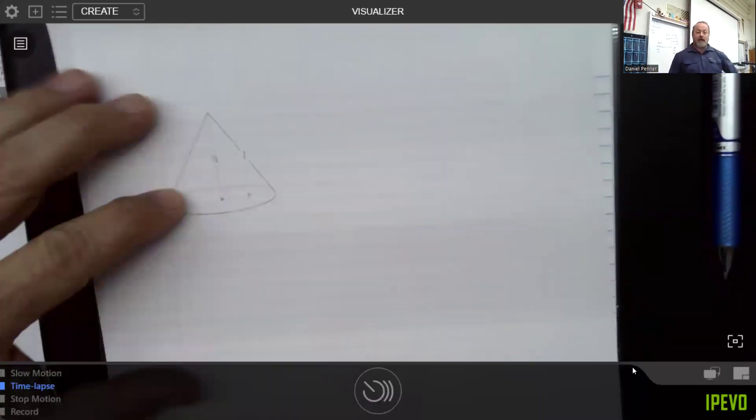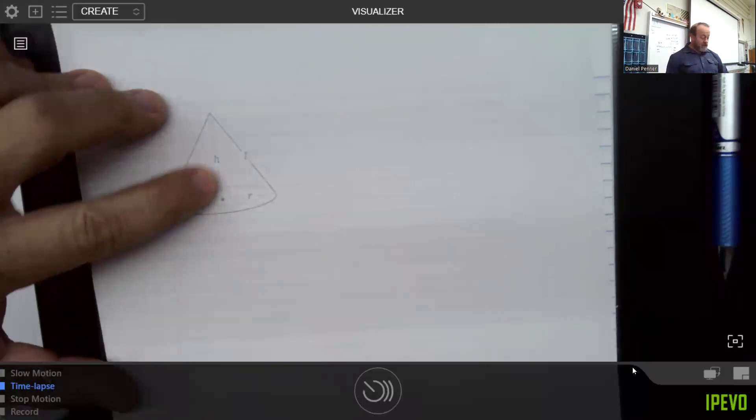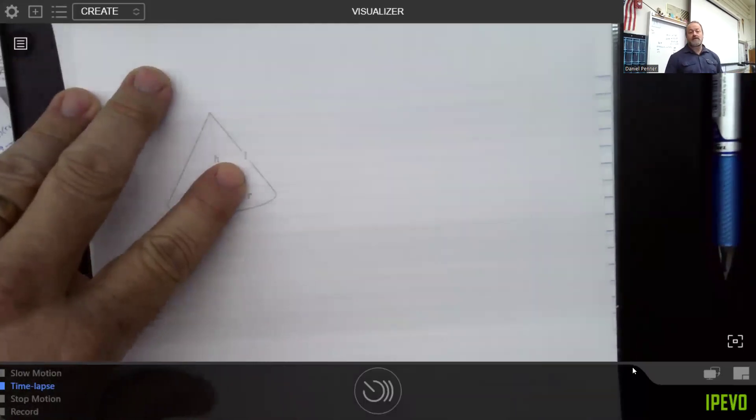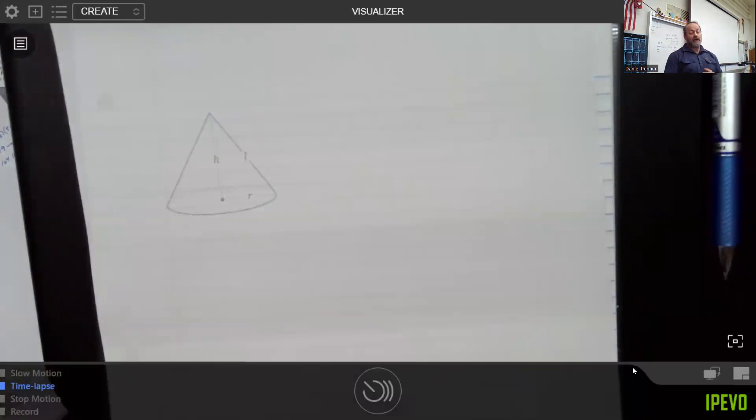Just remember that a cone has a radius because its base is a circle. It has a height, of course. And then this L right here stands for its slant height. So it turns out there's a proof of this, but I'm not going to go ahead and go through that entirely.